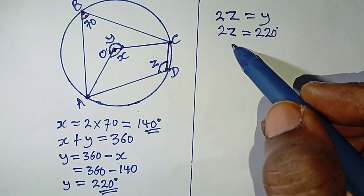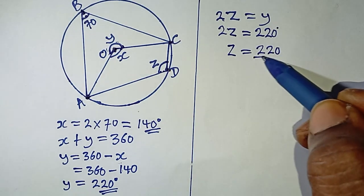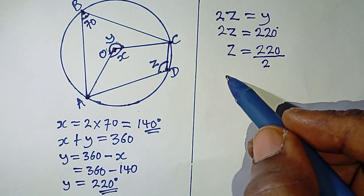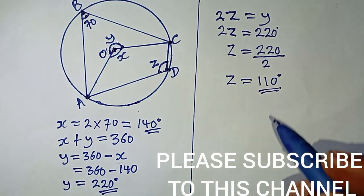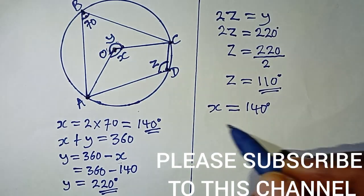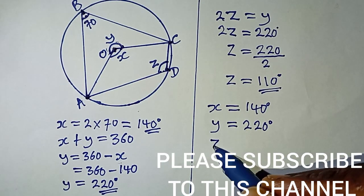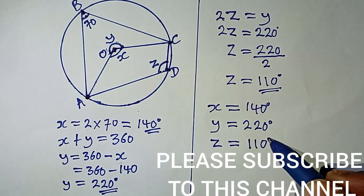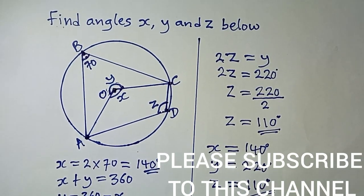To get z, we say z is equal to 220 divided by 2, which gives us angle z as 110 degrees. To summarize: x is equal to 140 degrees, y is equal to 220 degrees, and z is equal to 110 degrees as our final answers. Please subscribe to this channel to get more lessons like this. Thank you for watching and see you in the next video.